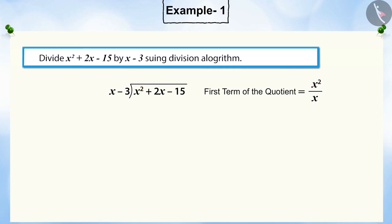by the highest power of the divisor, i.e., x. This gives x, which is the first term of the quotient. Now, multiply the divisor by this quotient and write it below the dividend. Then subtract the term written below from the dividend so that the remainder is 5x minus 15, which becomes the new dividend for further processing.